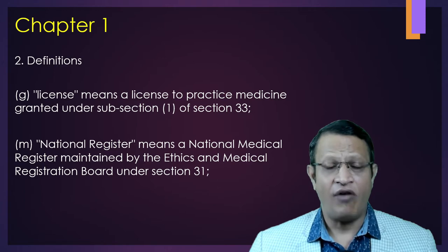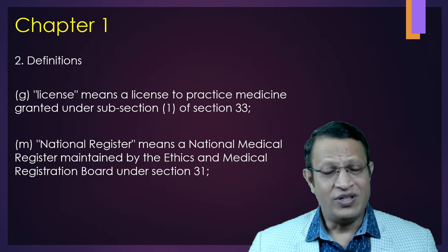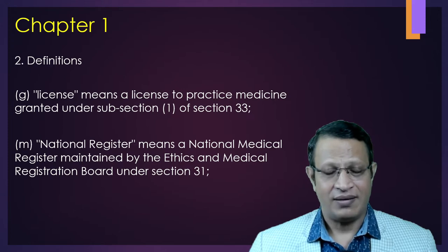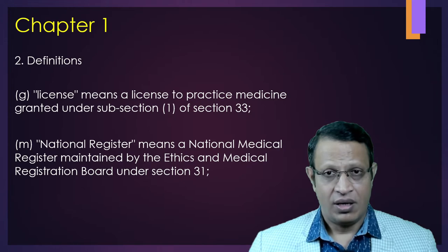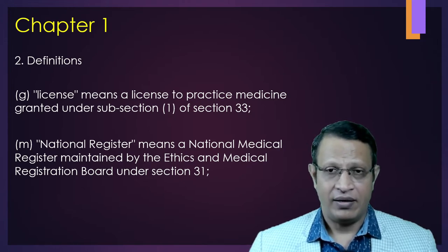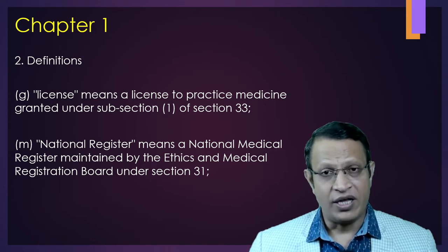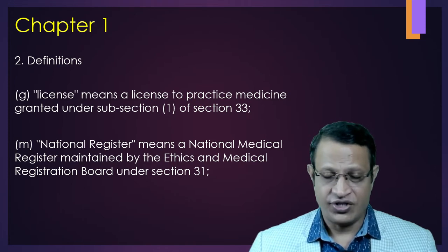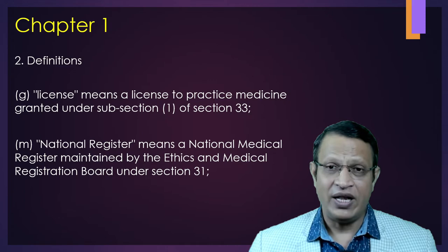Once a doctor gets the permanent registration under the National Medical Commission, they can apply to the state medical council for a license to practice medicine. As a doctor, I have to apply for a single registration under the National Medical Commission, and the NMC will give me a unique ID for national registration. From that registration number, I then need to apply to the various states where I am going to practice.